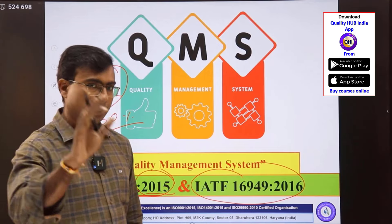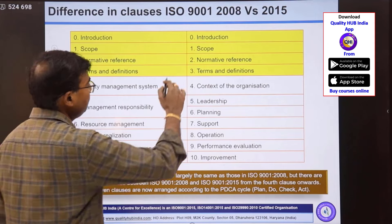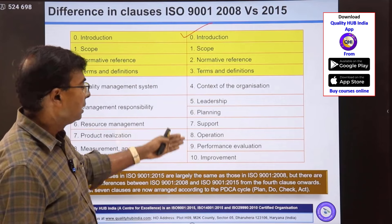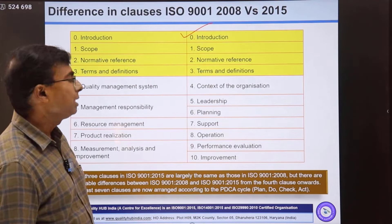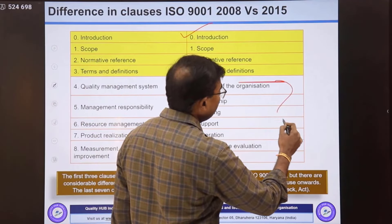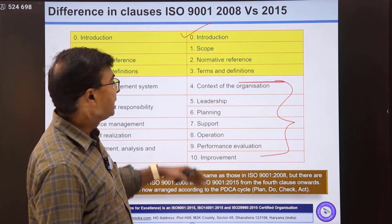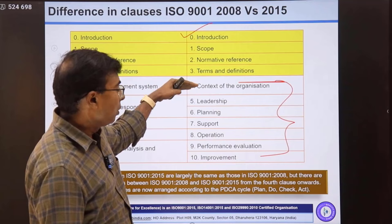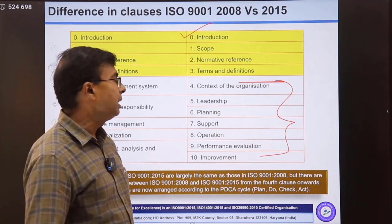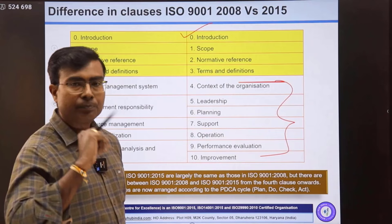When we talk about IATF 16949 and its clauses, the clauses are the same as 9001. 9001 has a total of 10 clauses, so IATF also has 10 clauses only. The important point to note is that in almost all the clauses there would be supplemental requirements, which means you have to first comply with all the generic requirements given in 9001, and then there are some additional requirements in each and every clause that you need to comply with to be certified to IATF 16949.